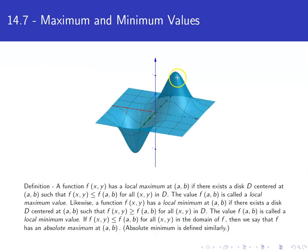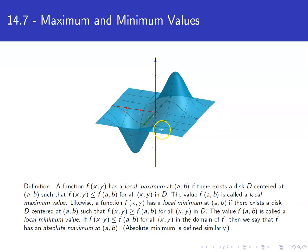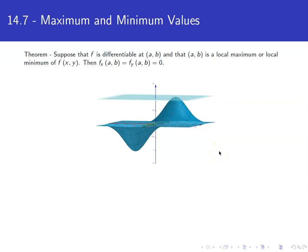Looking at this picture of the maximum: if we follow a grid line, it tops out and goes back down at that maximum, so the derivative with respect to that direction is zero. Likewise, following the other grid line, we hit the top and go back down again — the derivative is zero in that direction as well. So both partials equal zero at the maximum. Since both partials with respect to x and y are zero, the tangent plane is horizontal, much like back in Calc 1 when we had a local max or min, the tangent line was horizontal.